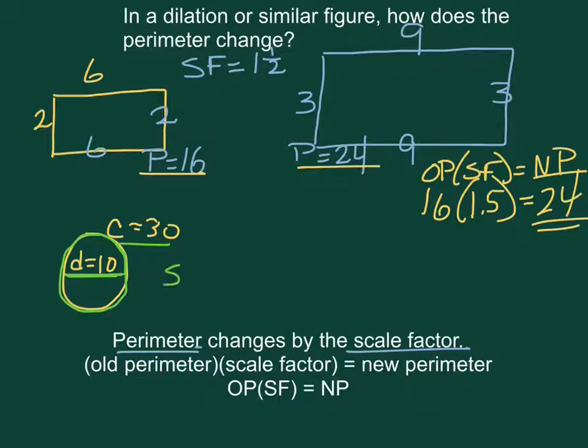So if we dilate it again, let's use the scale factor of 1.5. So our diameter will be 10 plus another 5. So our diameter is now 15 which means our circumference is about three times that much, about 45.